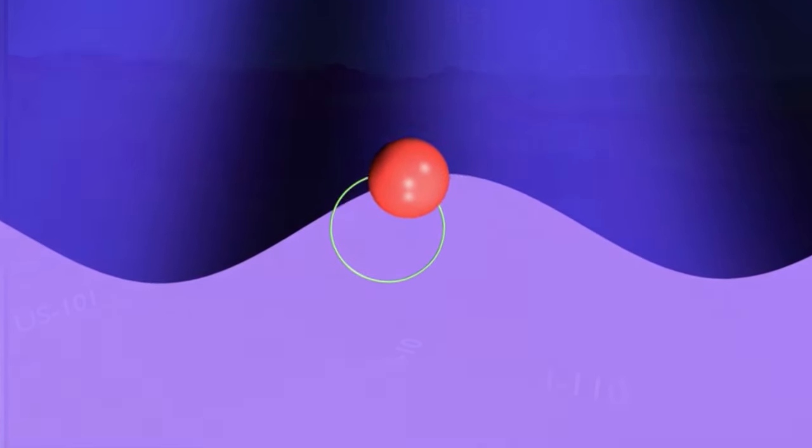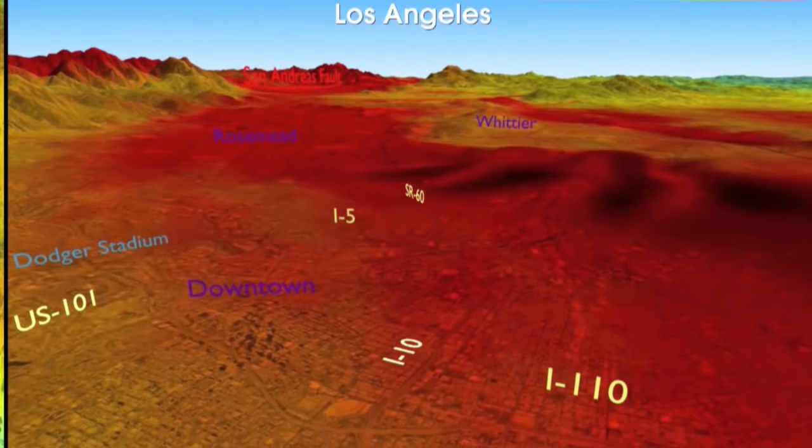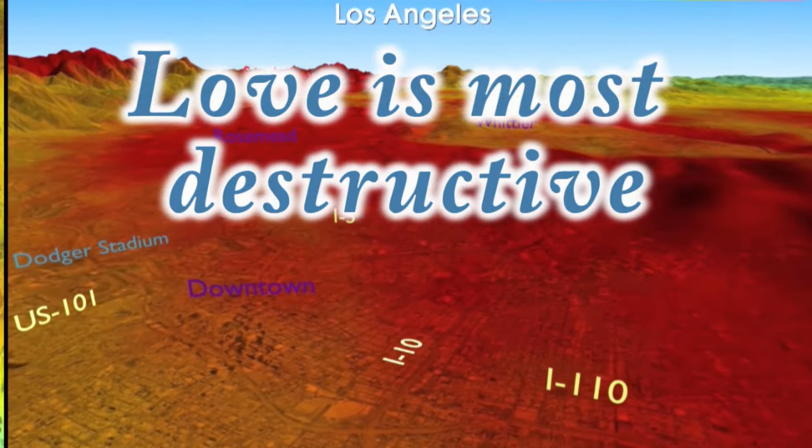As Rayleigh waves pass by, the ground rolls like waves in the ocean. This can topple many buildings, but most destruction has been attributed to the other surface wave.